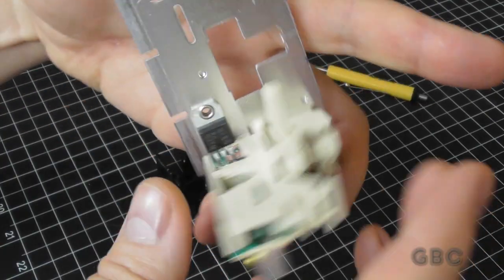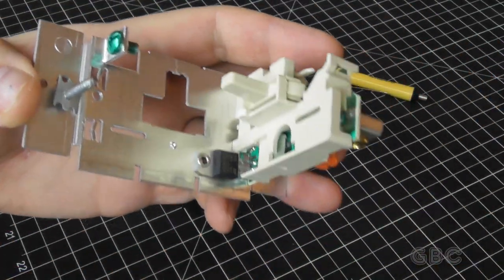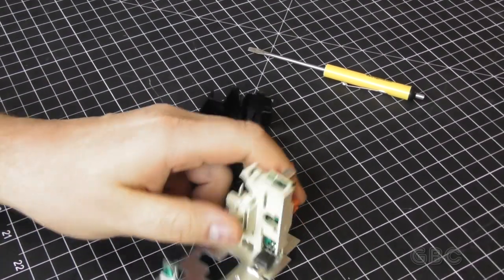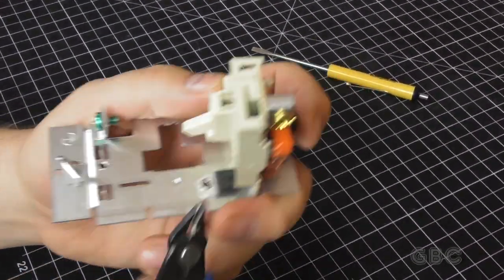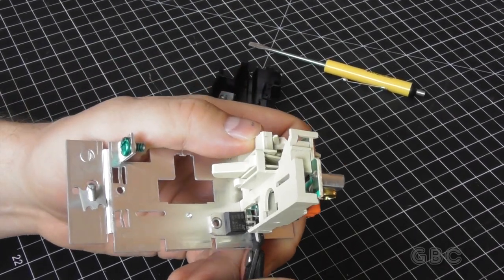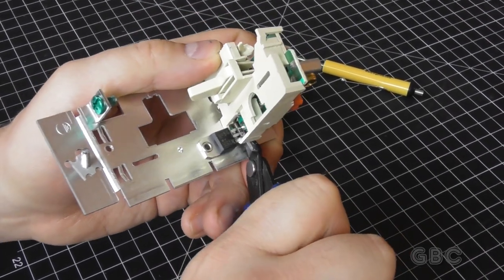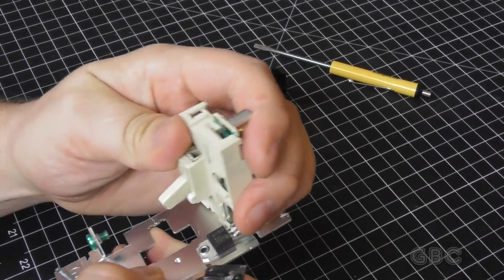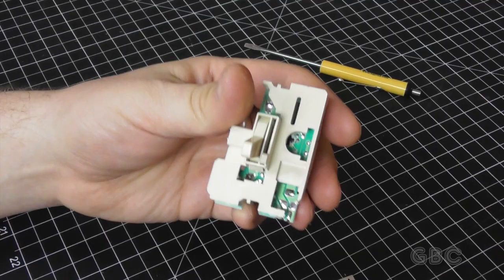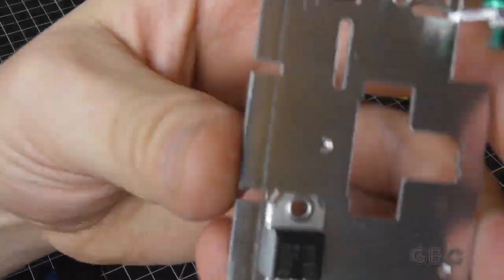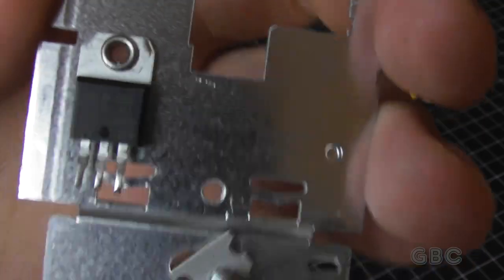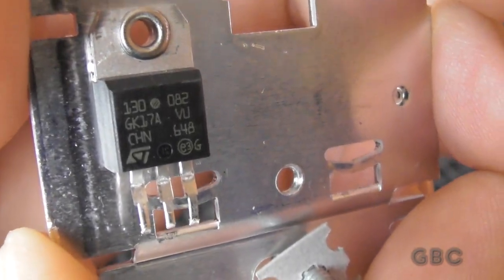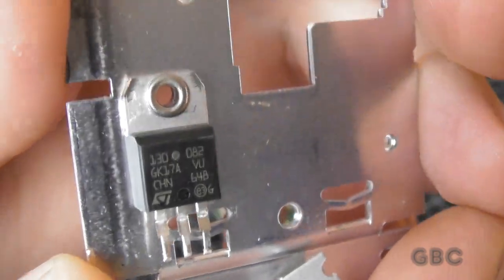Here we can kind of see the triac. I'm going to go get some cutters and cut these leads off. Alright I got the cutters. Just cut these three leads off. Here's a closer look at the triac that they're using the whole front as a heat sink for. That's what creates heat on this thing and what does all the magic.